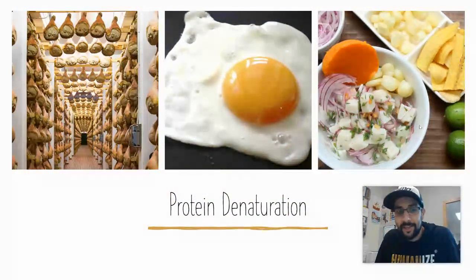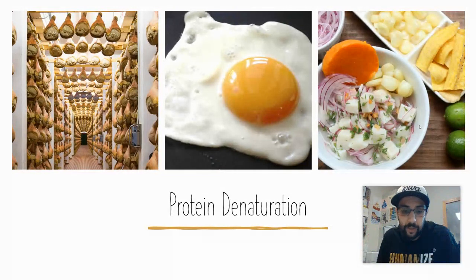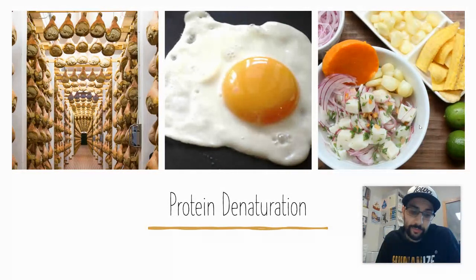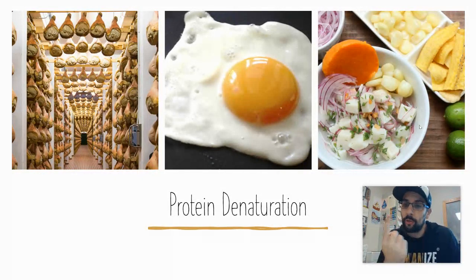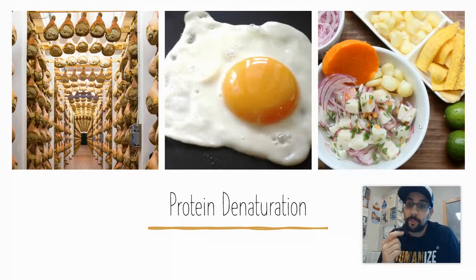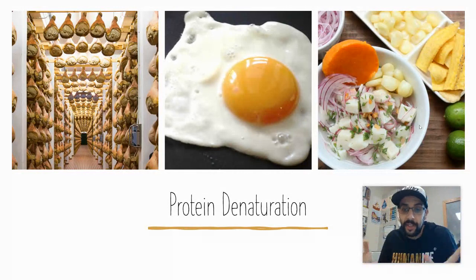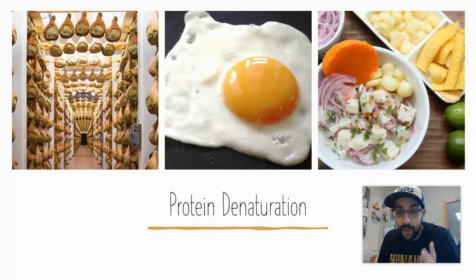Protein denaturation is the process of cooking proteins — meaning changing their texture and appearance — through the application of heat, salt, or acid. At a molecular level, natural proteins are shaped like coils or springs. When proteins are exposed to heat, salt, or acid, they go from springs and unwind into something more straight — that's what denaturing is. When proteins denature, they tend to bond together, meaning coagulate and form solid clumps. That's why when something gets cooked, acidulated, or salted, it firms up.